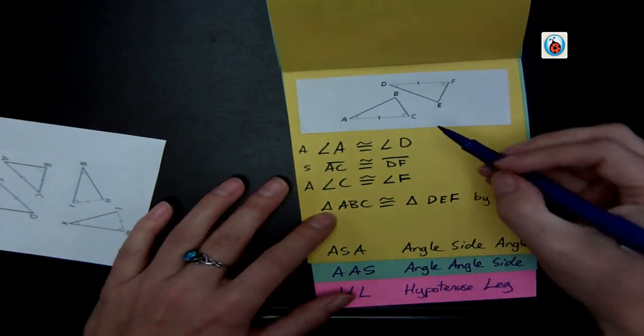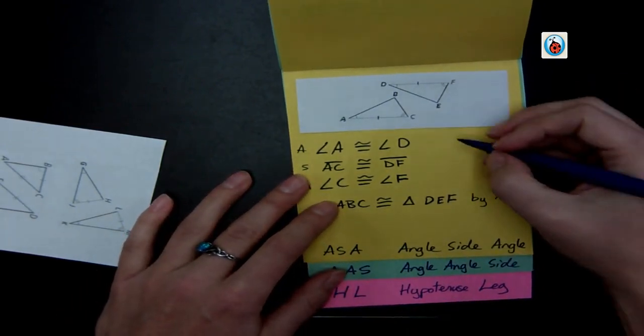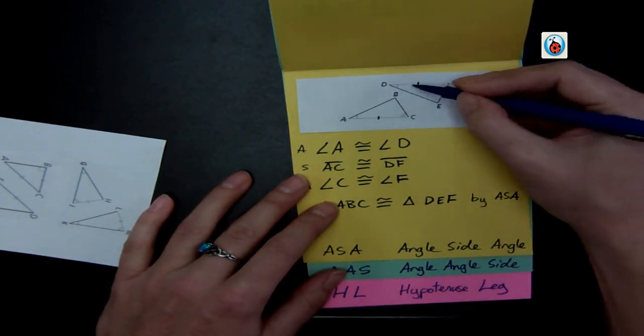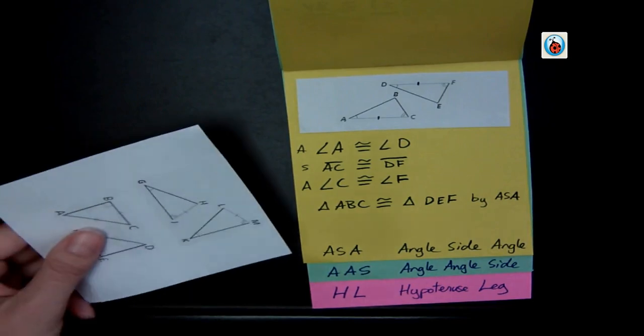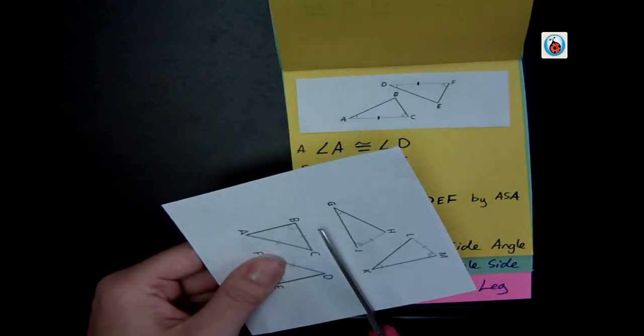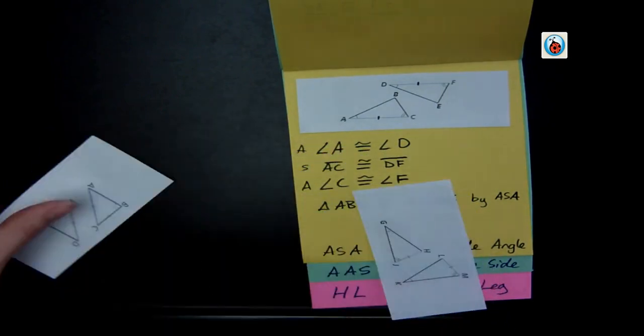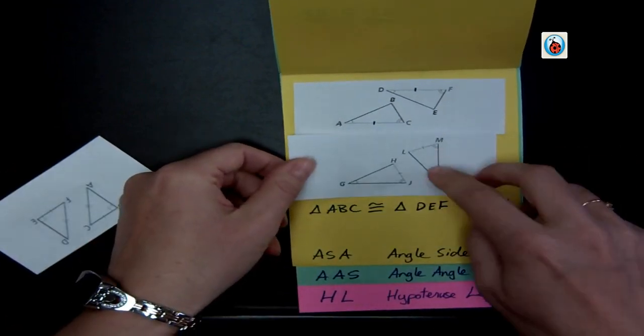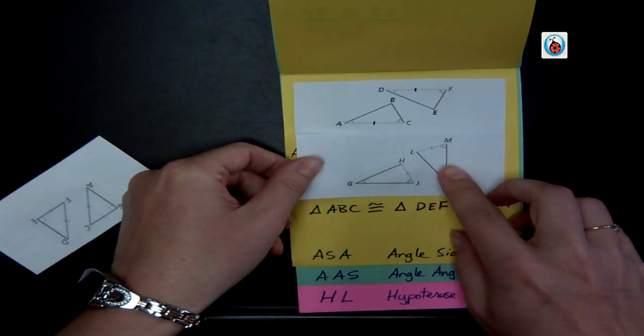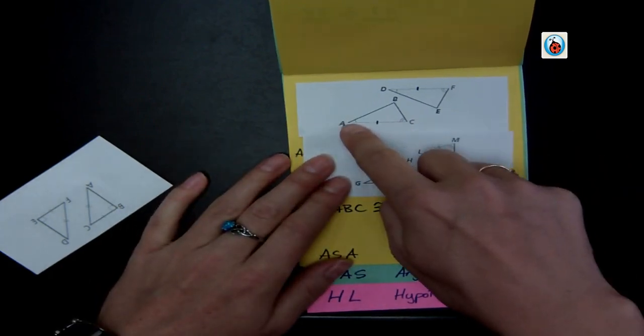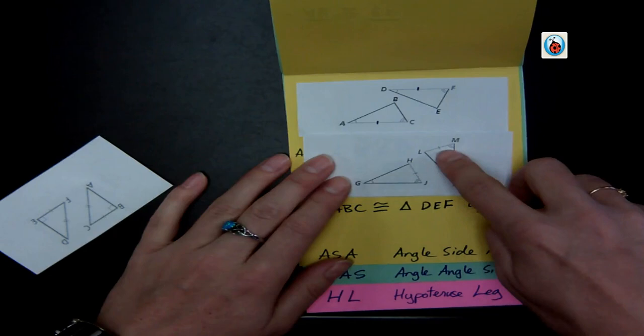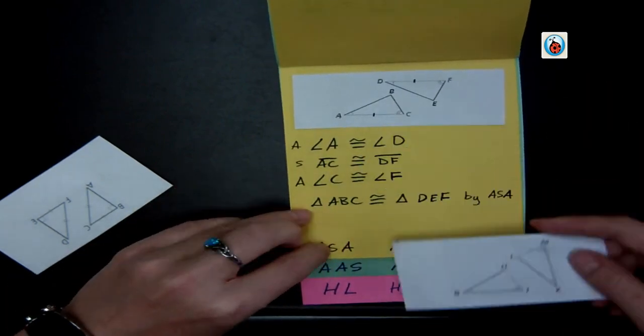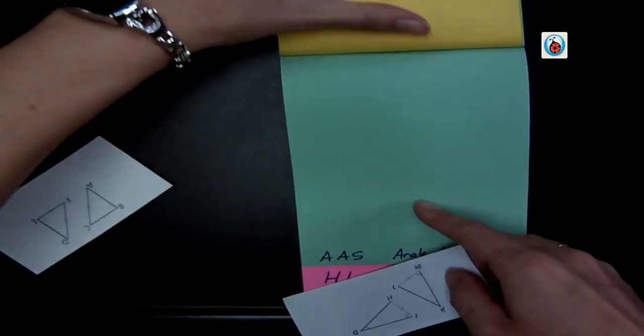And it's important when I have angle, side, angle, both angles are touching the side that is marked congruent for us. They're both touching. And that's to differentiate between our next triangle, which is angle, angle, side that we're going to do. And here also has two angles and a side matched up for us, but this time, instead of the side being in between the two angles, the side is only touching one angle. And so that's the difference between angle, side, angle and angle, angle, side.